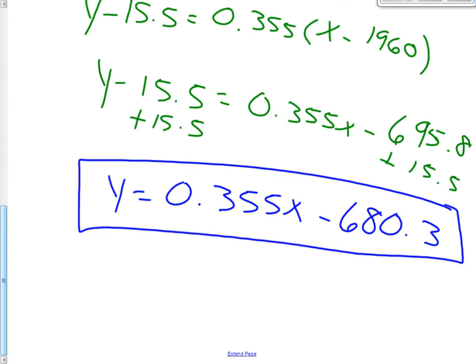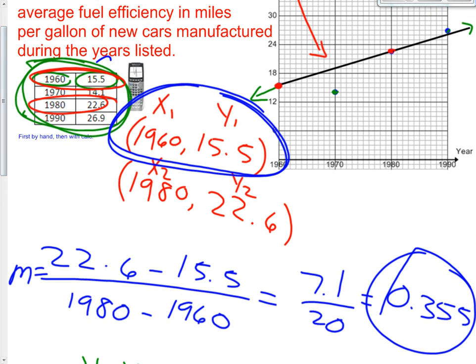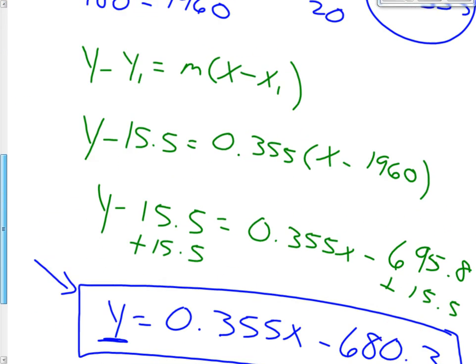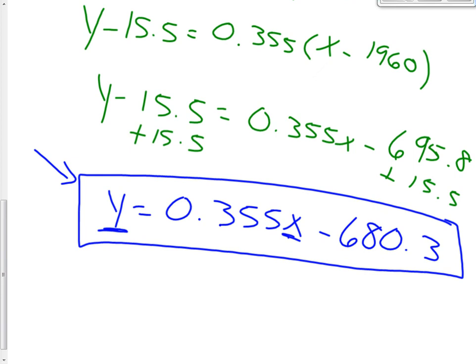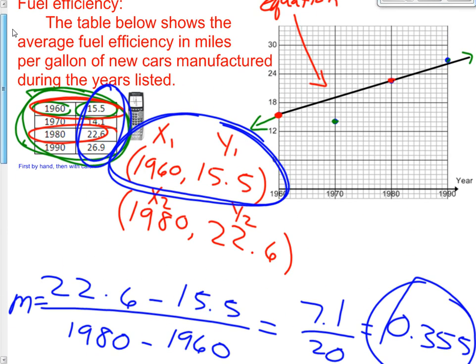Now, class, you might be thinking to yourselves, Mr. Berge, what the world is this even good for? What do we even know about this information? And it does look like a bunch of mumble-jumble right now, but we have to put it into perspective of our data. The y variable is miles per gallon. Here it is, miles to the gallon. Our x variable, that is the years, right here.